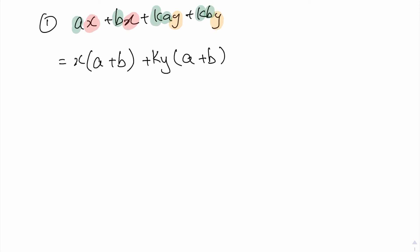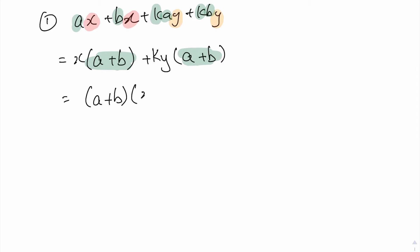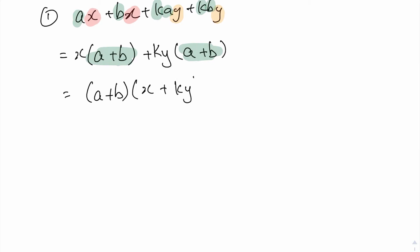And now you can see that your a + b are the new common factors, so we can do another step to factorize out the a + b. And what are we left with? For the first term, we are left with an x, while the second term we are left with the ky. That's it. So this is the completed factorization of the above expression.